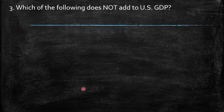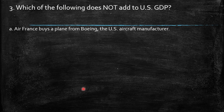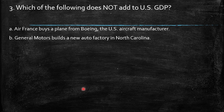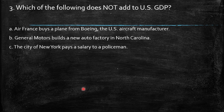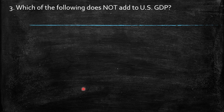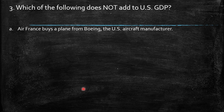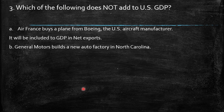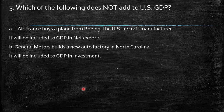Third question: which of the following does NOT add to US GDP? Options: A) Air France buys a plane from Boeing, the US aircraft manufacturer; B) General Motors builds a new auto factory in North Carolina. Air France buying from Boeing is included in GDP as net exports, so it adds value. General Motors building a factory is included in GDP as investment in equipment and factors of production.